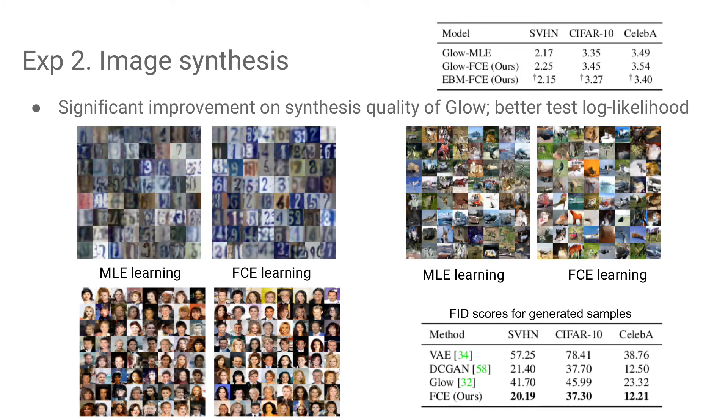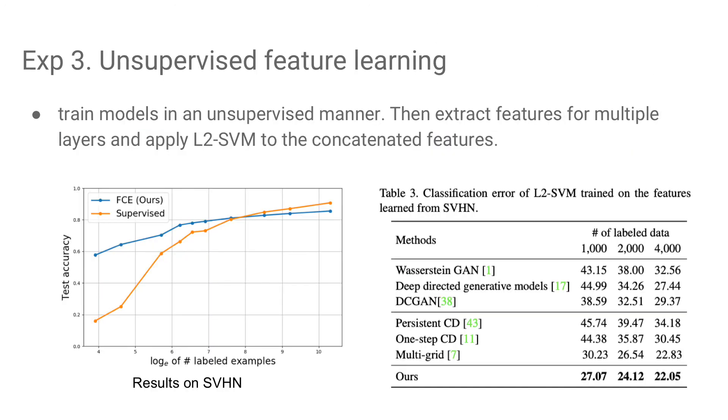For image synthesis, we test on SVHN, CIFAR-10, and CelebA datasets. FCE shows significant improvement on synthesized quality of GLOW compared to MLE learning, and the testing log likelihood of EBM is better. To further explore the EBM learned with FCE, we perform unsupervised feature learning.